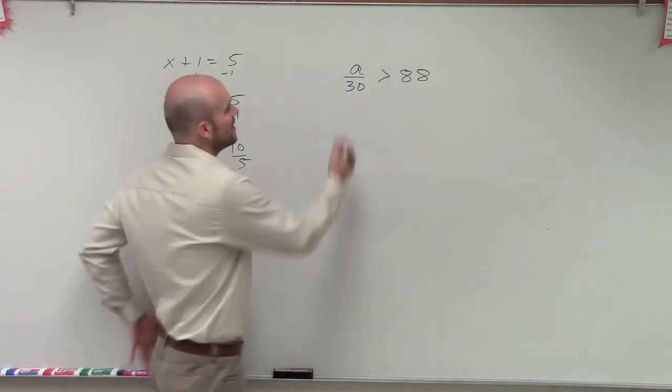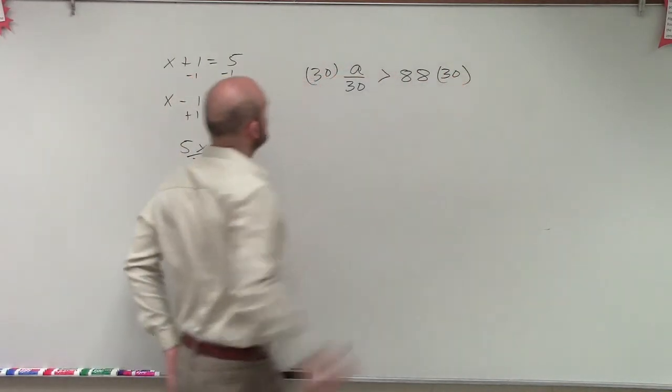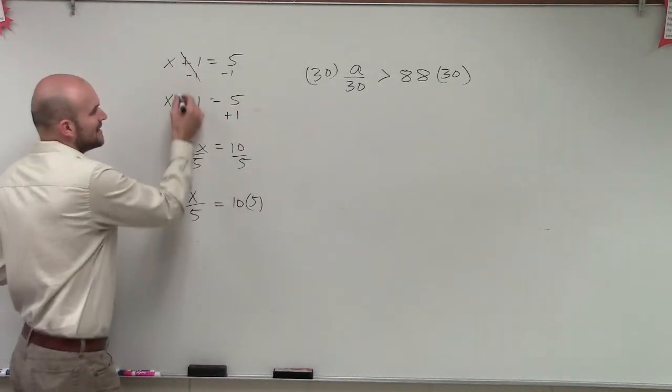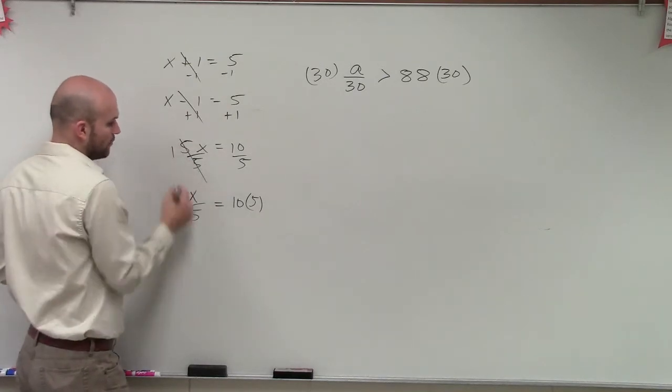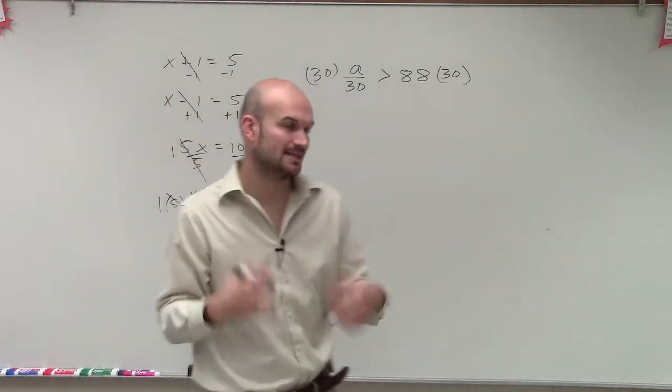So therefore, in this case, you can see I just need to multiply by 30 on both sides. Now it's important to use inverse operations, because what inverse operations do is they eliminate that term, because this adds a 0, this adds a 0, that divides to 1, and that divides to 1, therefore leaving us with our variable isolated.